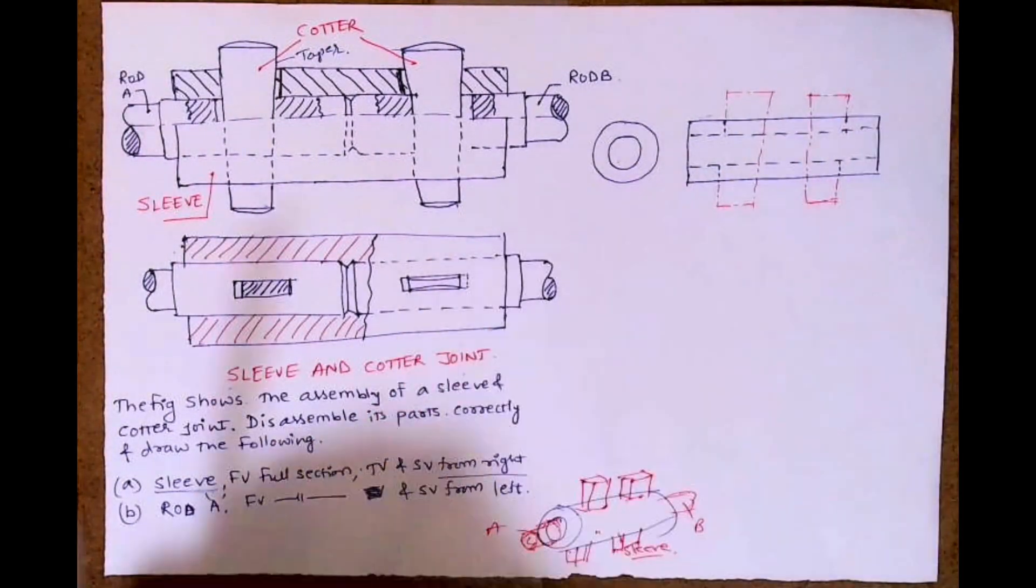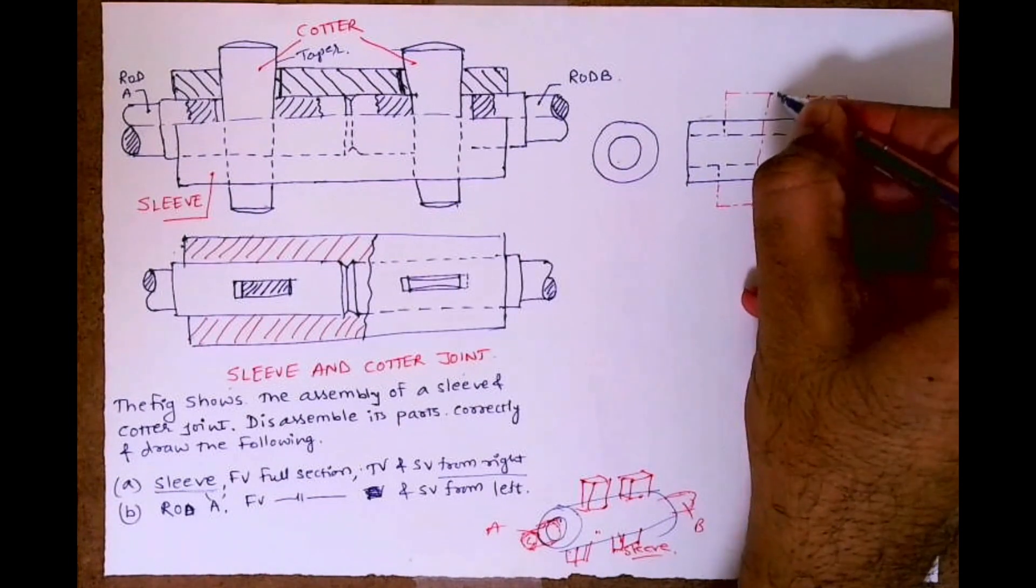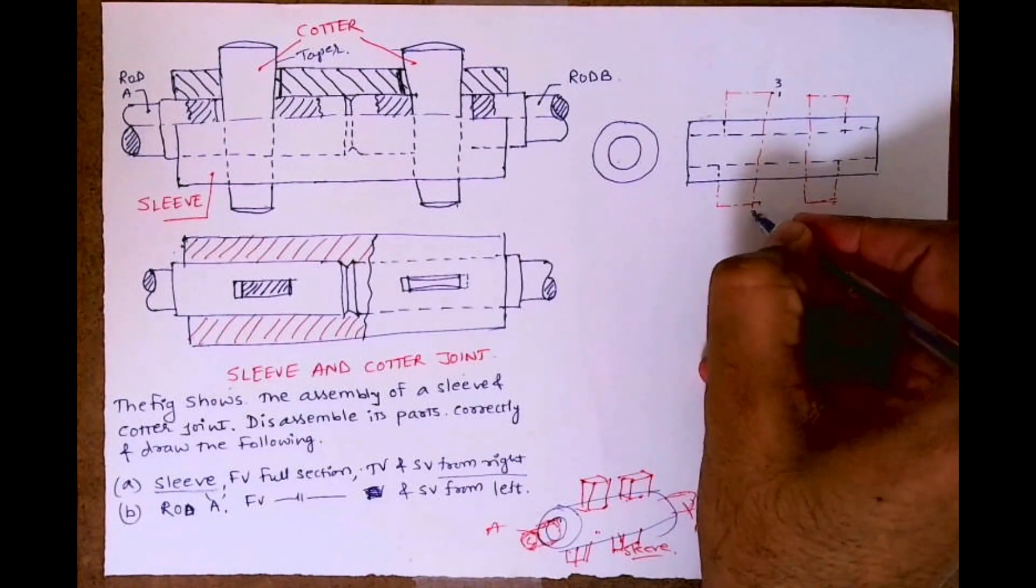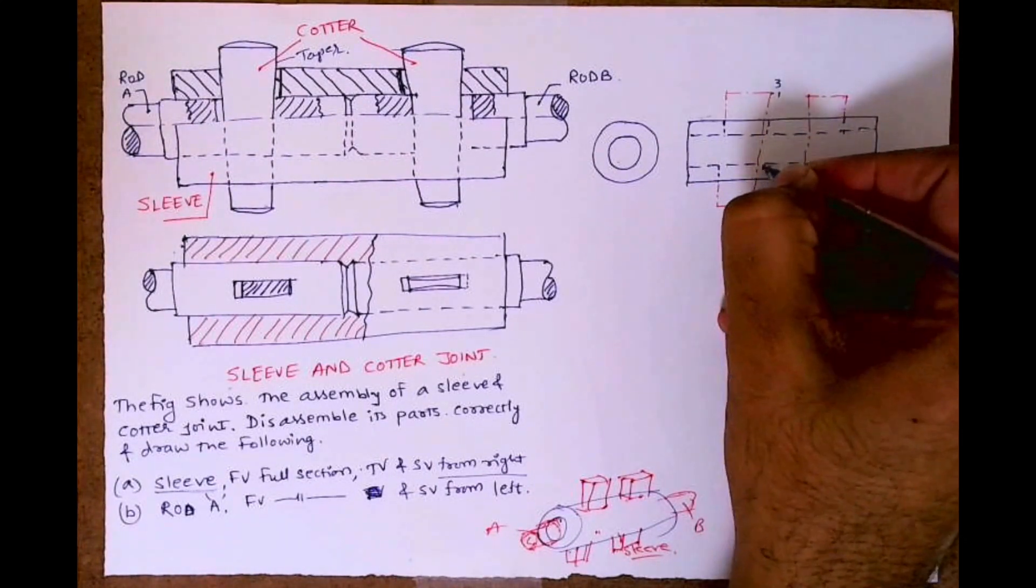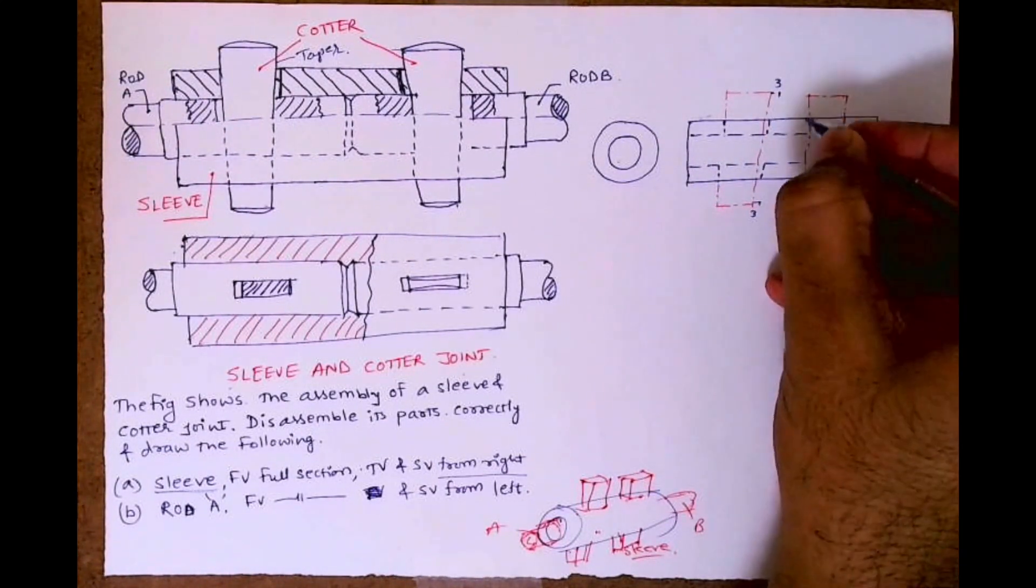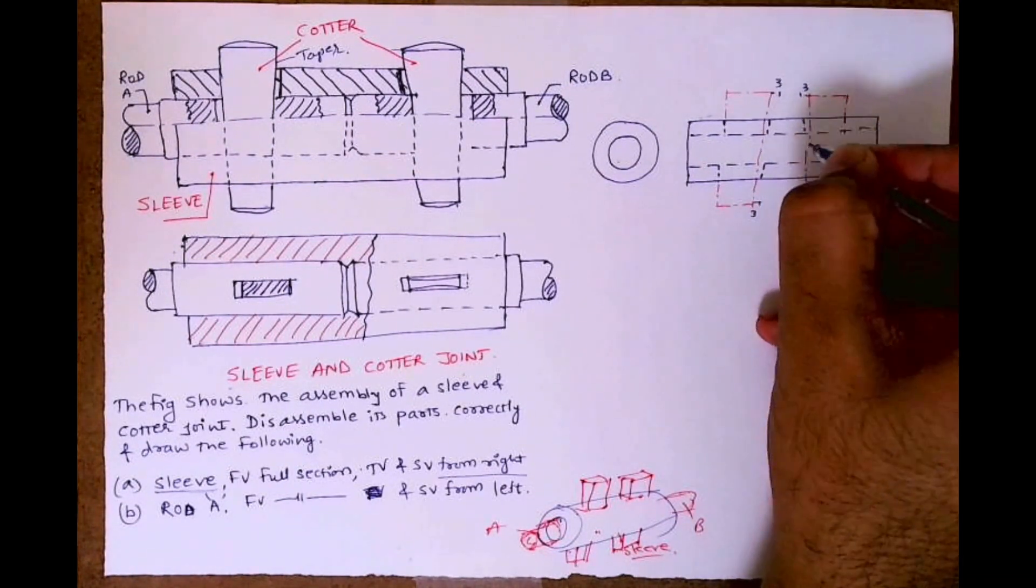So what will happen then: I will get the clearance, 3mm clearance. See here, you take 3mm. Here you take 3mm and then draw, you join this line so that line will be important. Here also you take 3mm and you join this line.